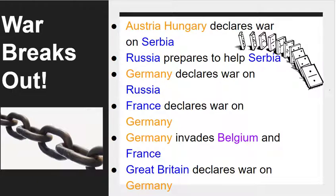So war breaks out. We call this series of events the chain reaction, or the domino effect. When you're a little kid, you stack up dominoes in little patterns — maybe they go up the table and down the stairs. Once they're all perfectly set in line, you just tip over one domino and the whole thing falls into place.